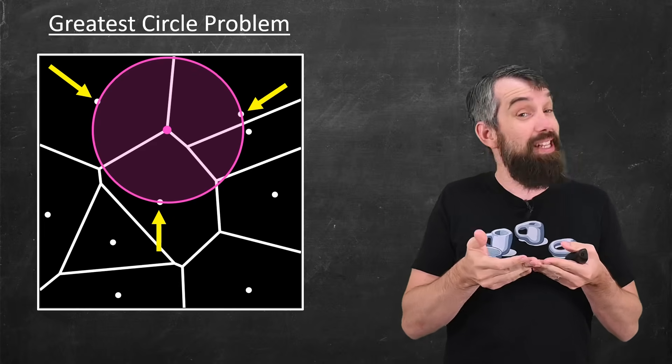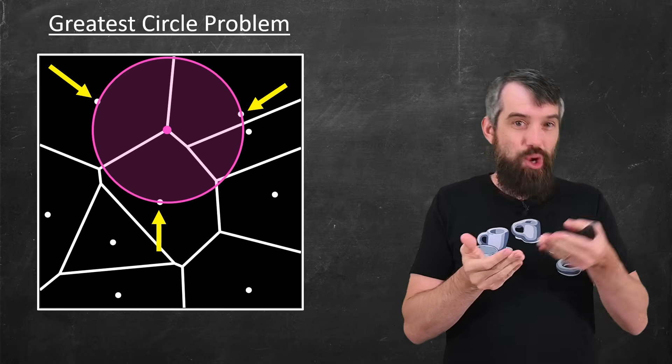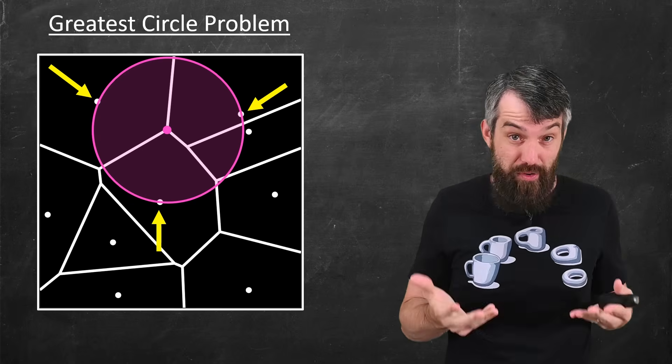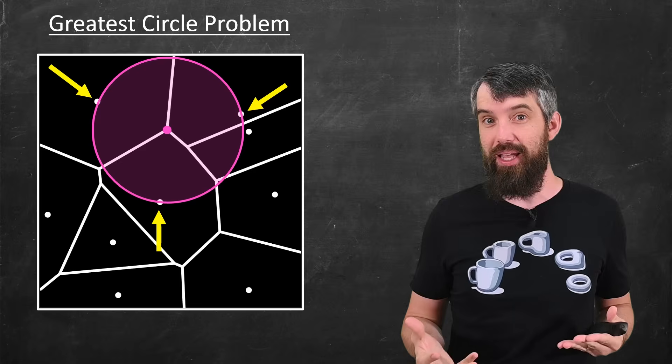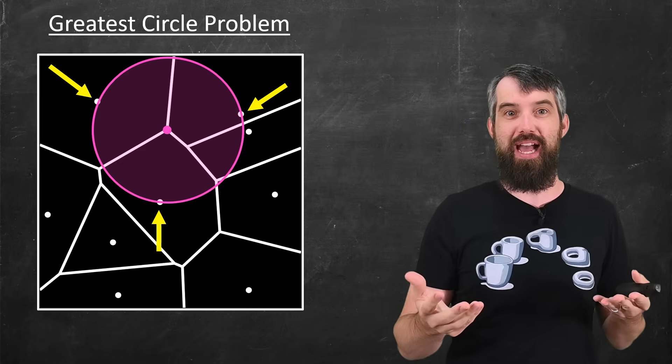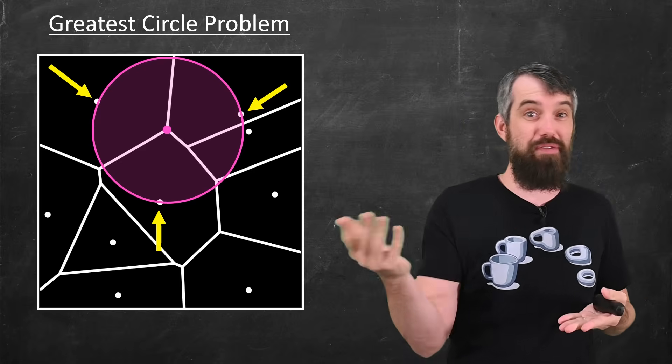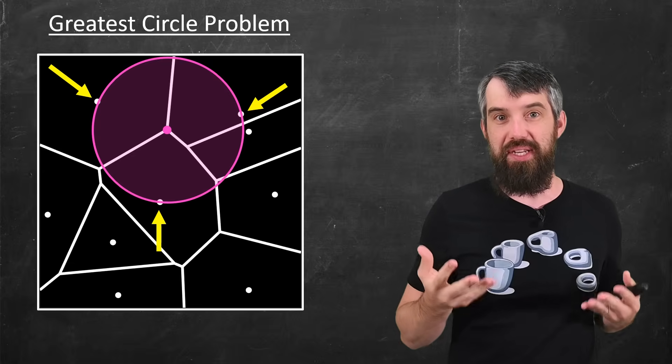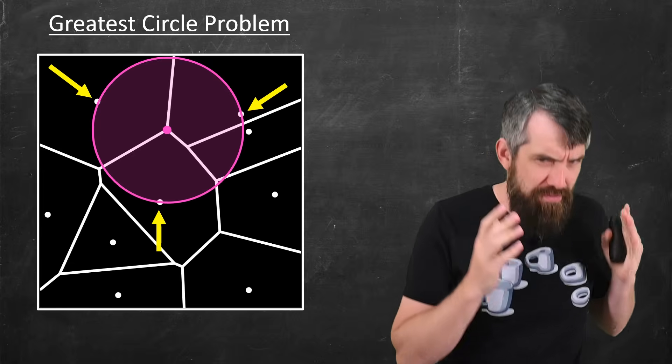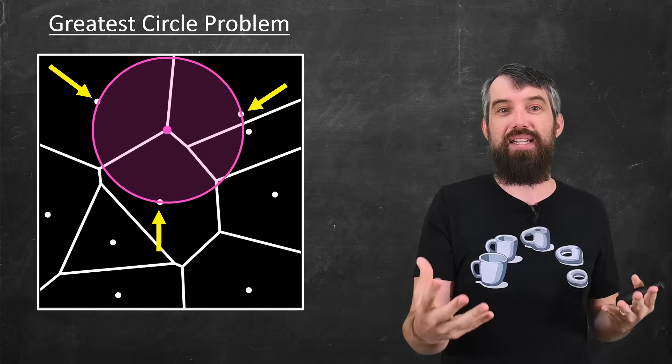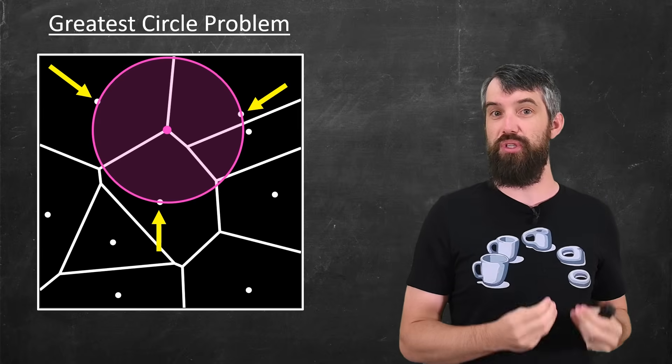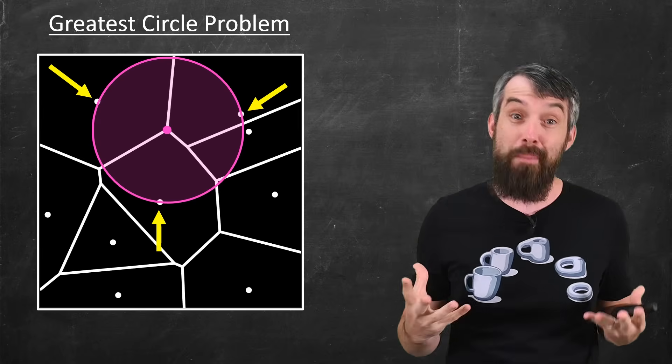Because on each of the lines that are incident to this point, they are representing equality between two of the points. So the vertex has equality between all three. And if you stepped off the vertex, then you'd be closer to one of the three points than you otherwise needed to be.